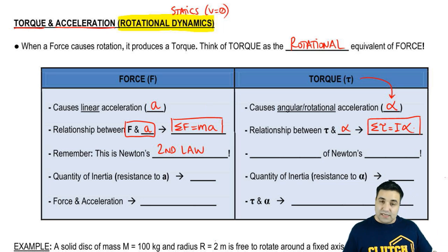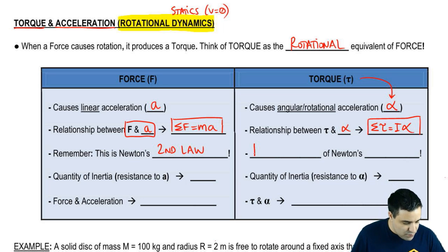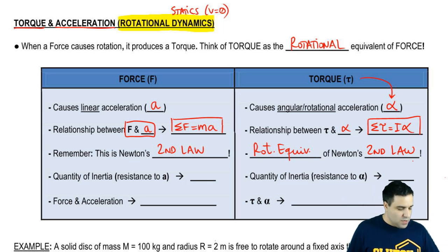So these two equations are basically the same thing. Just one is with linear variables. The other one is rotational variables. In fact, this is also Newton's second law. This is the rotational equivalent or the rotational version of Newton's second law. So you may see your professor or your textbook call this Newton's second law. And the idea is that both of these guys are Newton's second law.